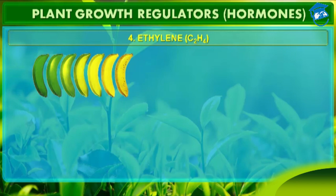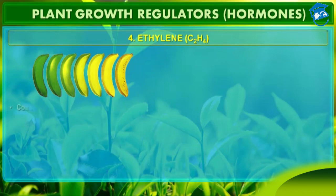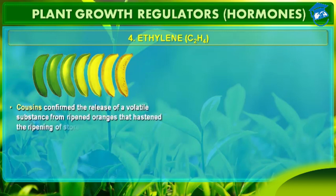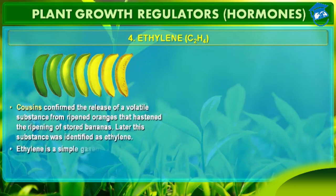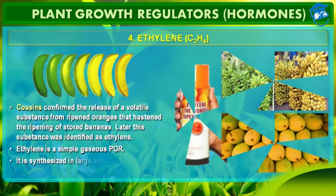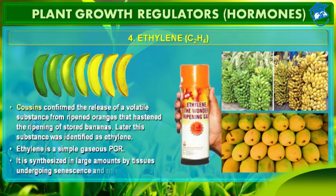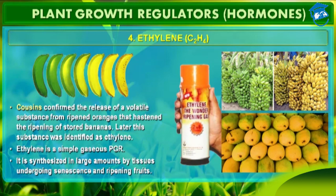Ethylene is C2H4, which is a gaseous hormone. It is the only hormone which is gaseous in nature. It is synthesized in large amounts by tissue undergoing senescence and ripening fruits. Influences of ethylene on plants include horizontal growth of seedlings, swelling of the axis, and apical hook formation in dicot seedlings.